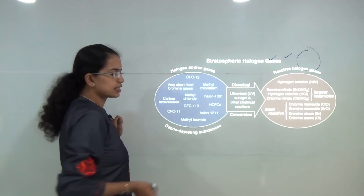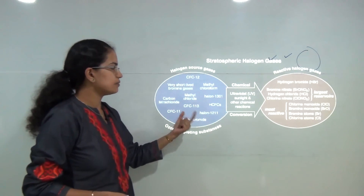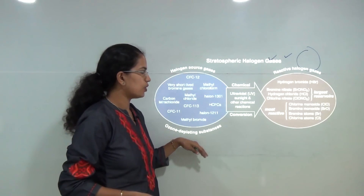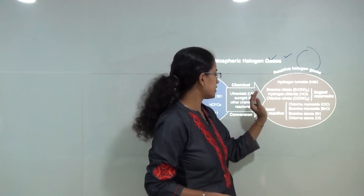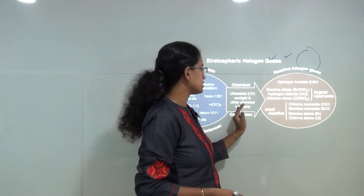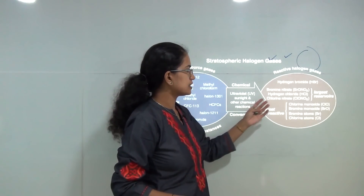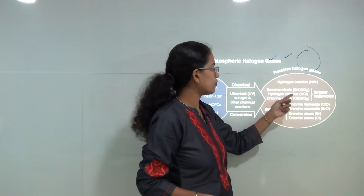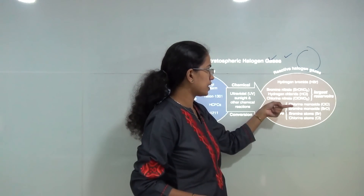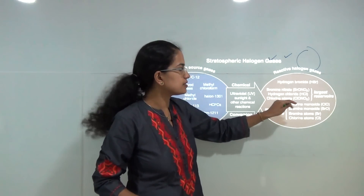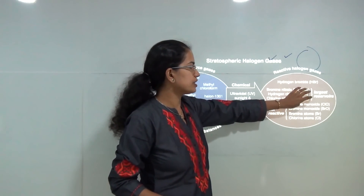Carbon tetrachloride (CCl₄), methyl bromide, and others, when they react in the presence of ultraviolet rays, lead to chemical reactions and the formation of bromine nitrate, hydrogen chloride, and chlorine nitrate. However, these are found in large amounts but are not very reactive.